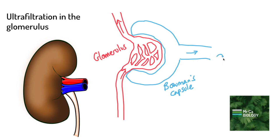Eventually we're going to get to our loop of Henle after our proximal convoluted tubule. And then we have our distal convoluted tubule. And then remember we get to our collecting duct down there.